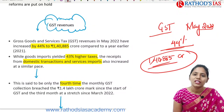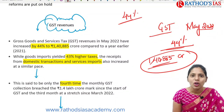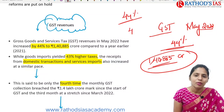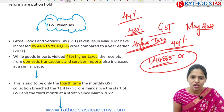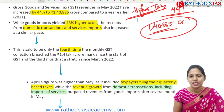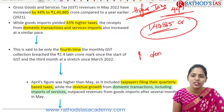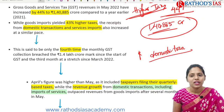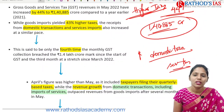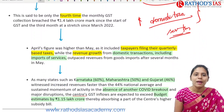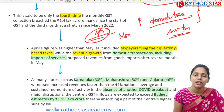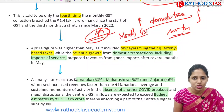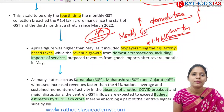Goods which are mainly imported yielded about 43% higher taxes. Receipts from domestic transactions and service imports also increased at a similar pace. This is said to be only the fourth time that monthly GST collection has breached the ₹1.4 lakh crore mark since the start of GST.